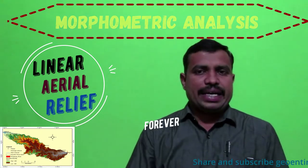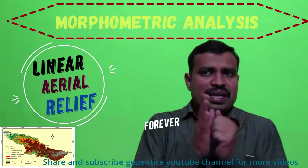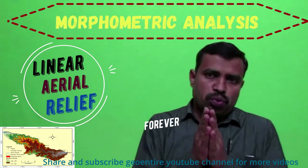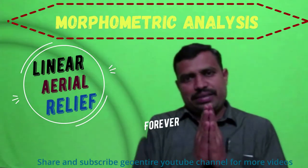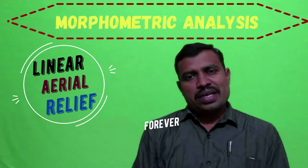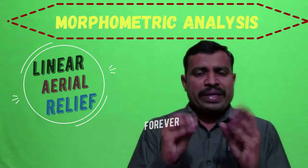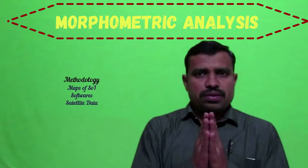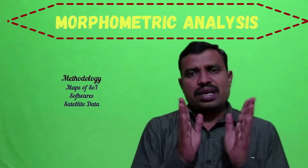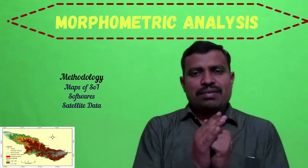The study of drainage patterns and morphometric analysis is also used to delineate the groundwater potential zone in a particular watershed. There are different methodologies used to determine the morphometric analysis of any basin.